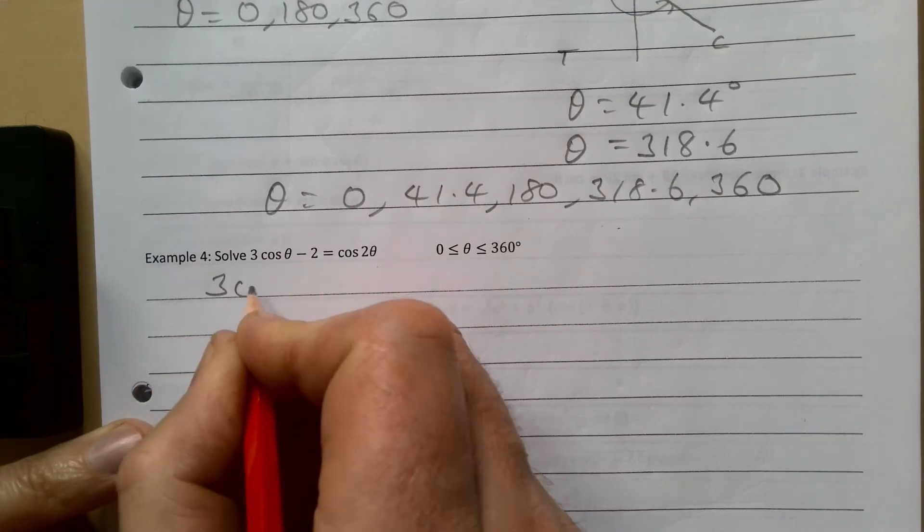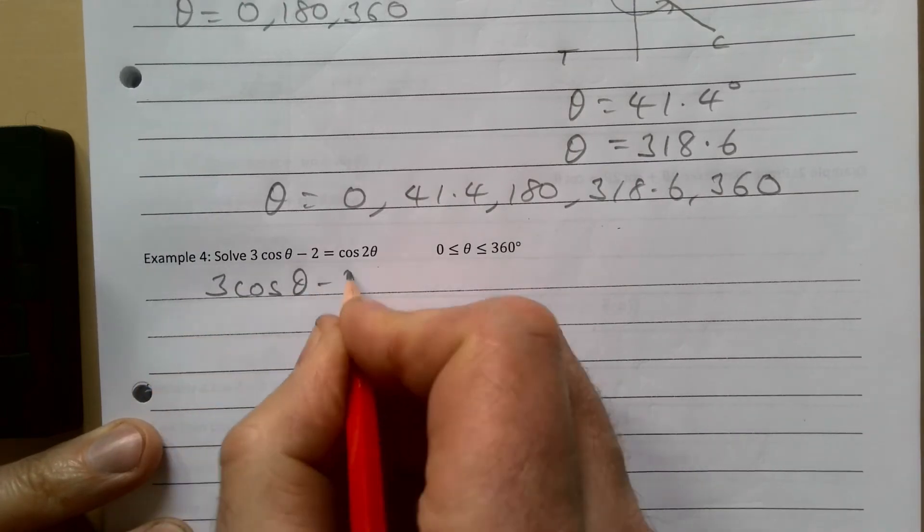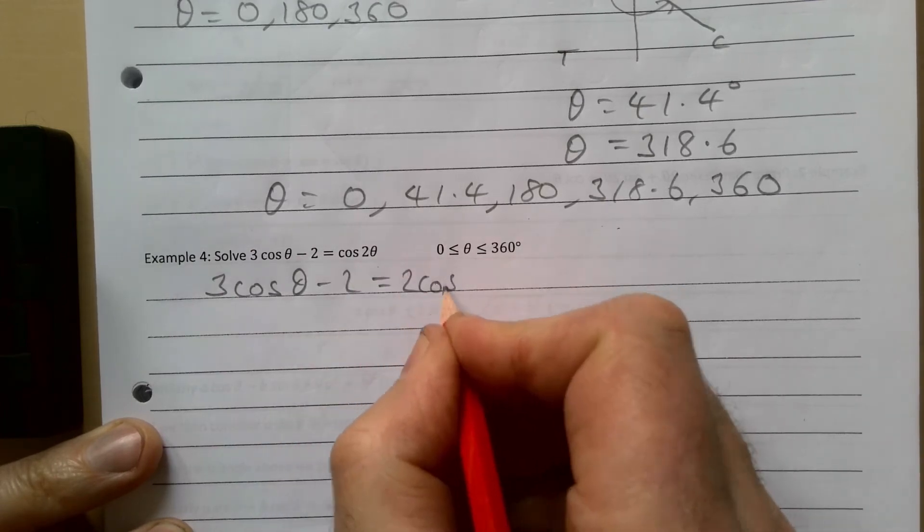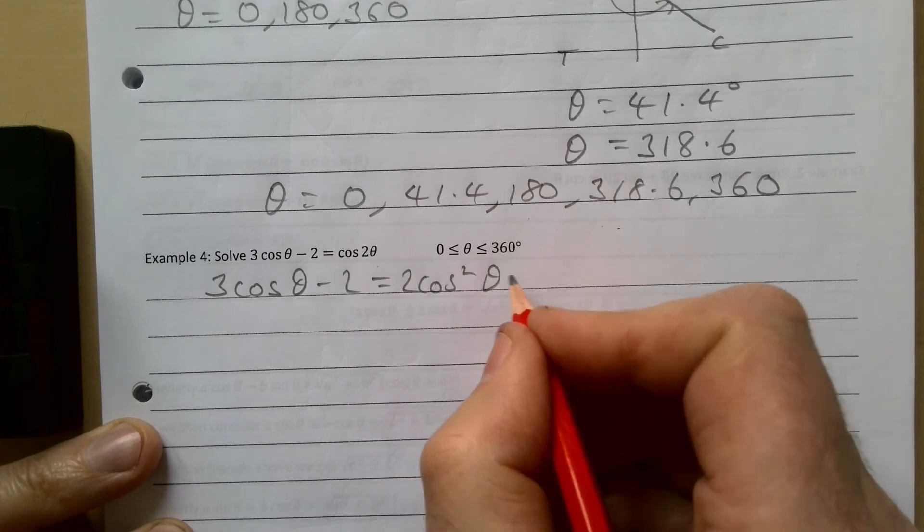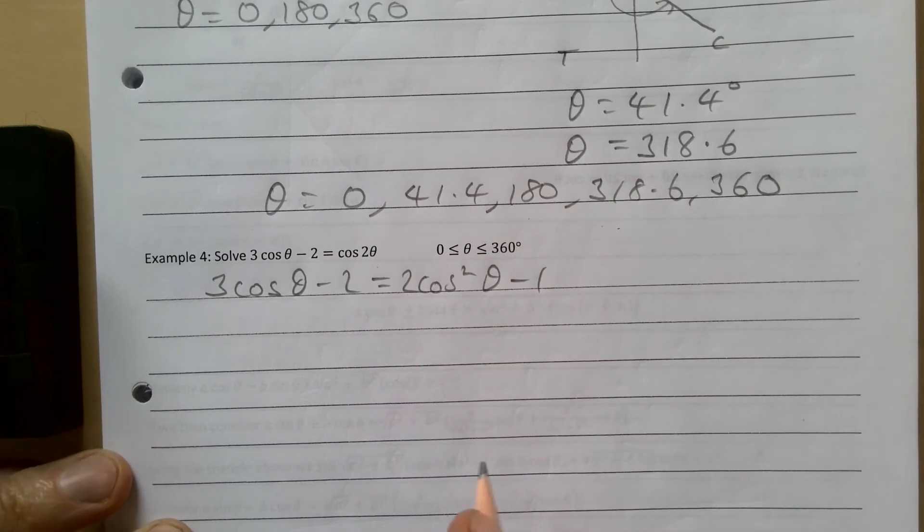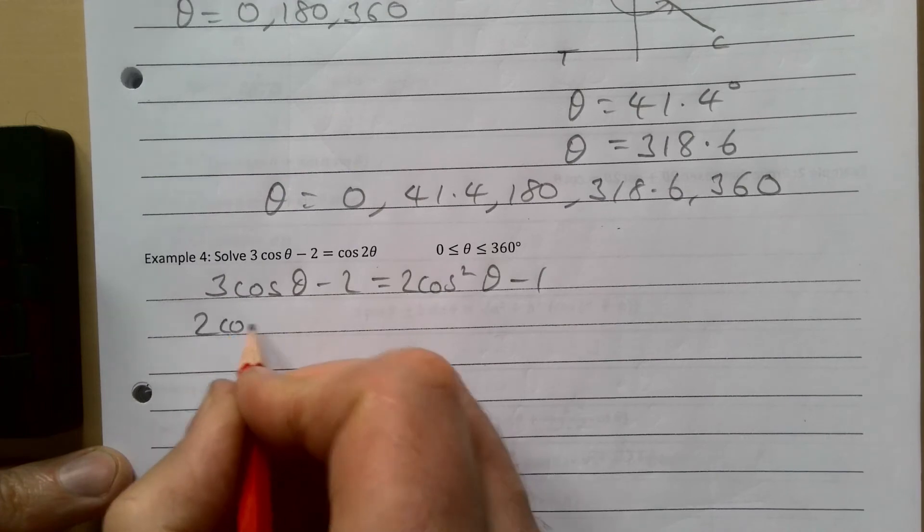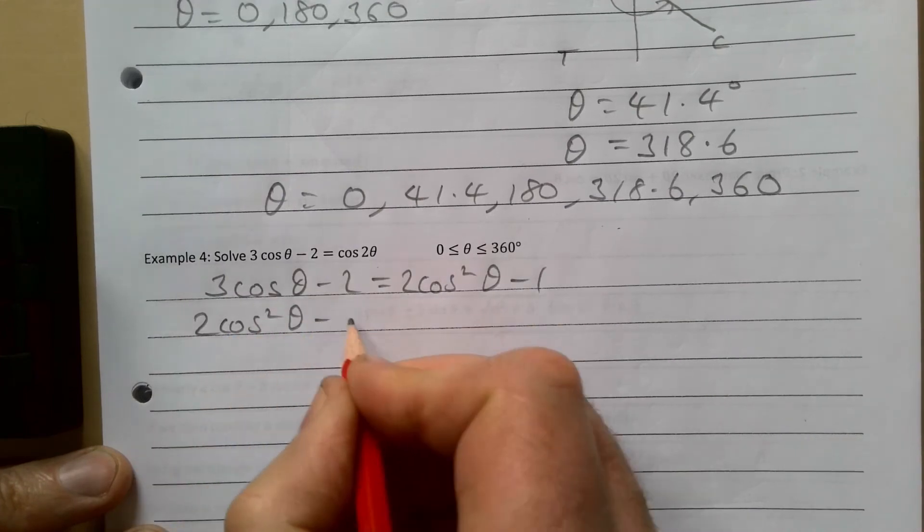So 3 cos θ - 2 = 2 cos² θ - 1. Remember quadratic? I'm going to take everything over to this side so it gives us 2 cos² θ - 3 cos θ + 1 = 0.